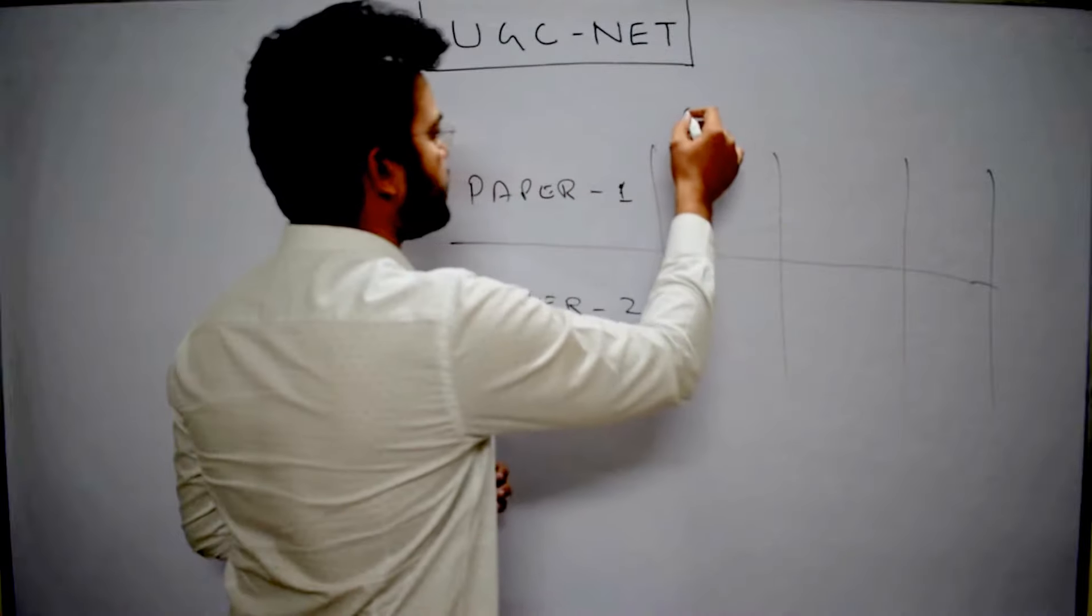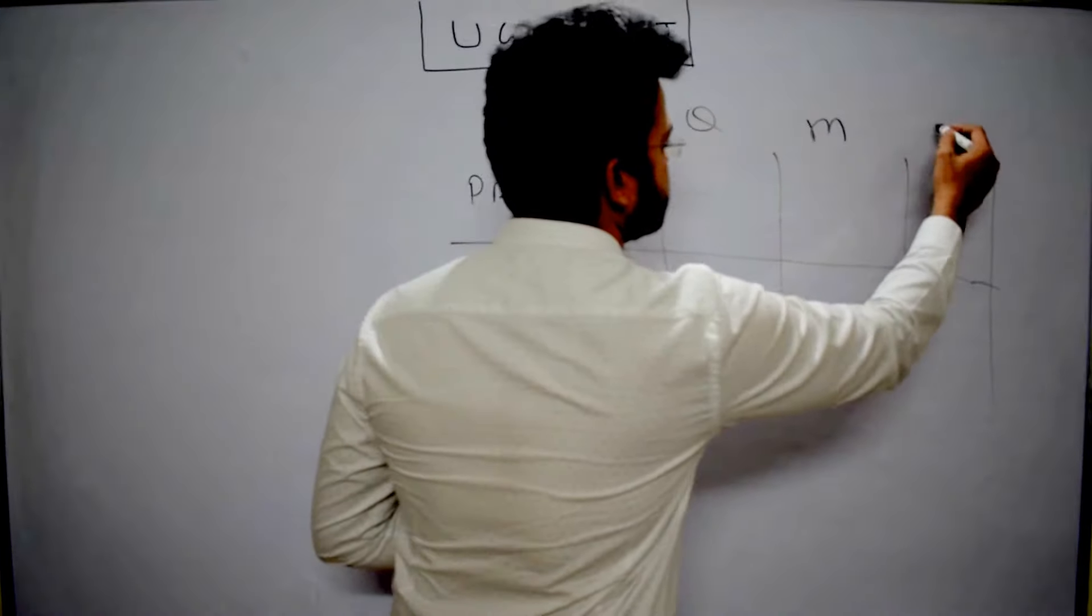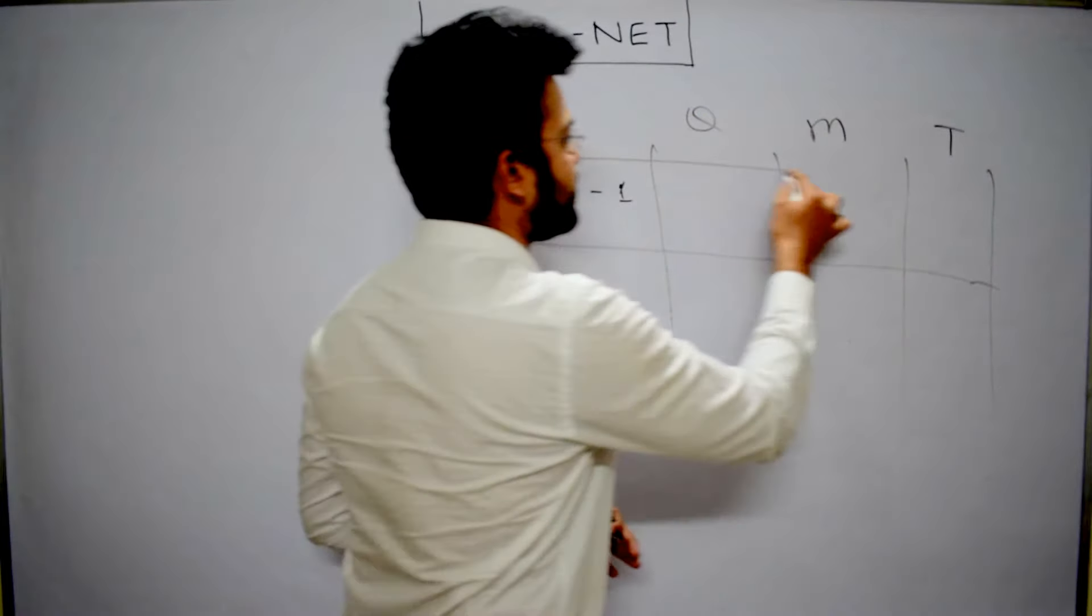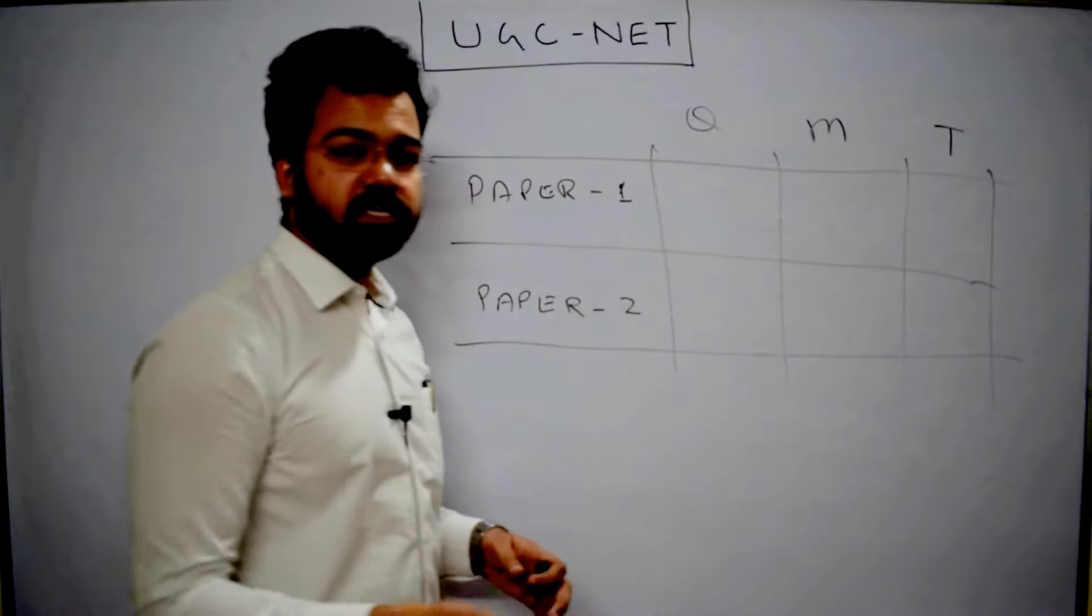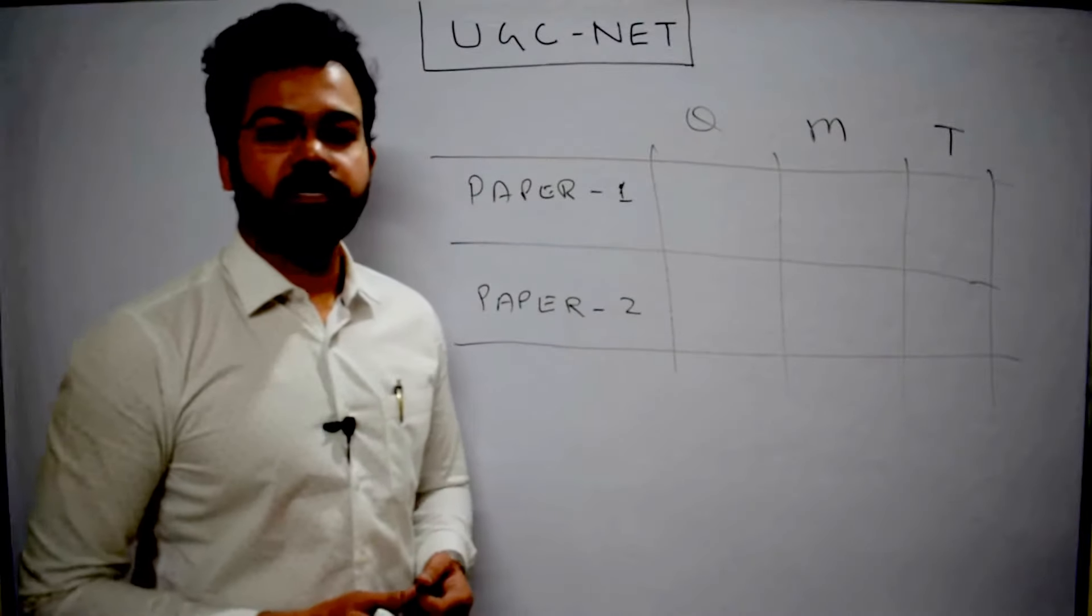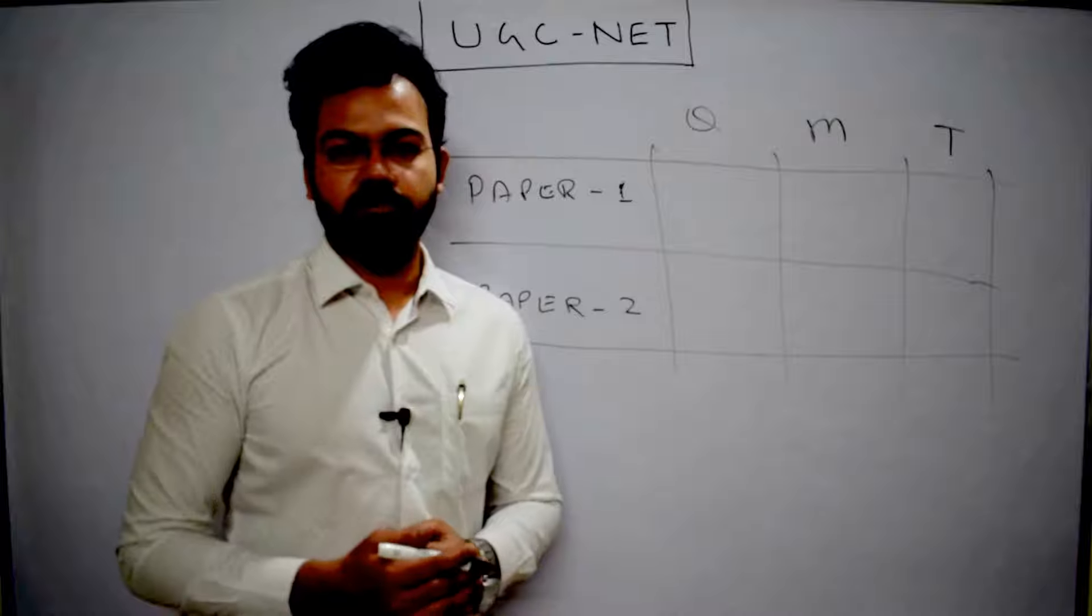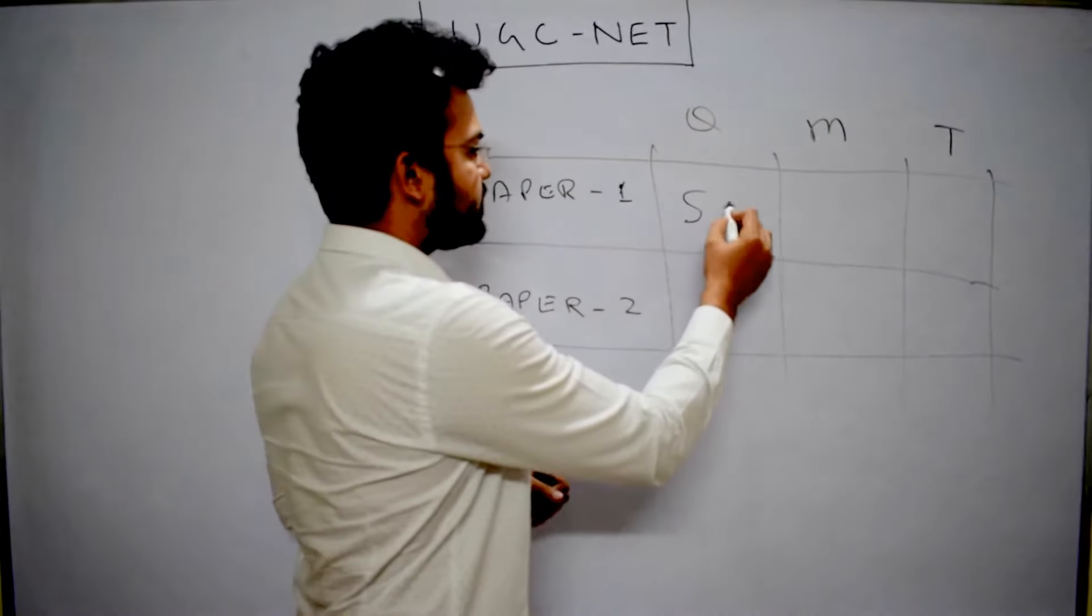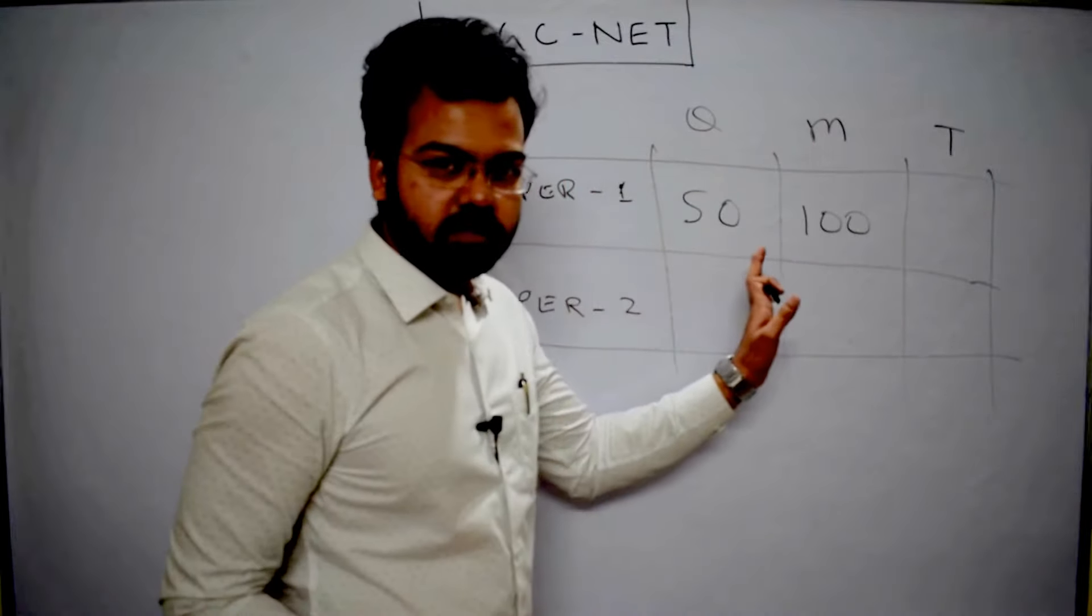First, we'll discuss how many questions will be in paper one, marks allotted, and time limit. Paper one covers general knowledge like teaching aptitude, communication, reasoning, data interpretation, environment, higher education, and some governance questions. These are 50 general questions of 100 marks, meaning two marks per question, with a time limit of one hour.